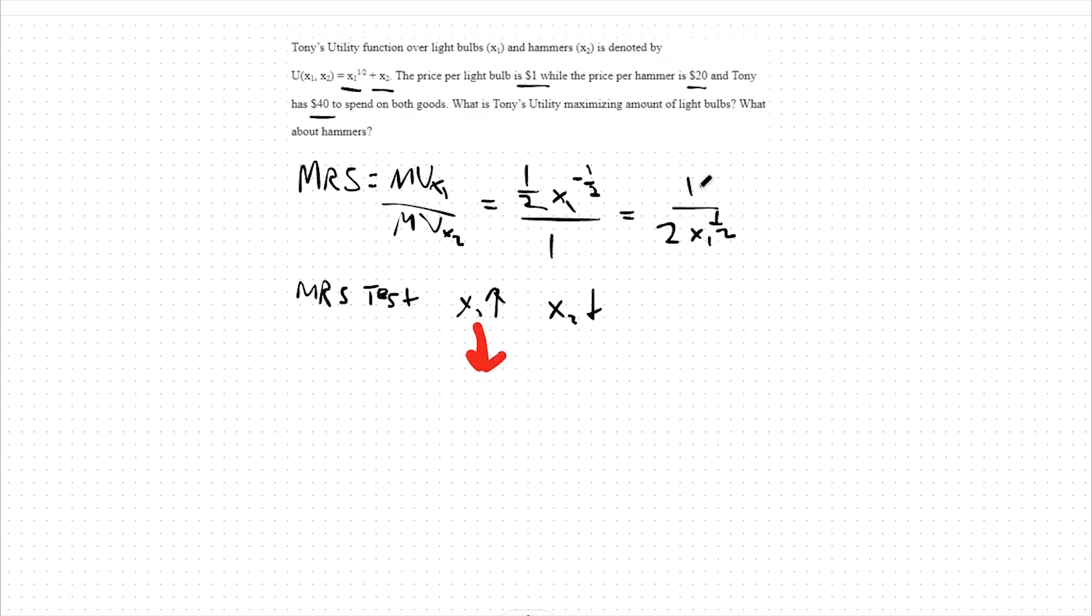x1 gets larger, meaning we're dividing by a larger number, and therefore the entire marginal rate of substitution or this entire function is becoming smaller. Additionally, as x2 decreases, nothing happens to our marginal rate of substitution because there's no variable 2 in this equation. I'll denote that as a horizontal arrow. This means, in net, we have a diminishing marginal rate of substitution.